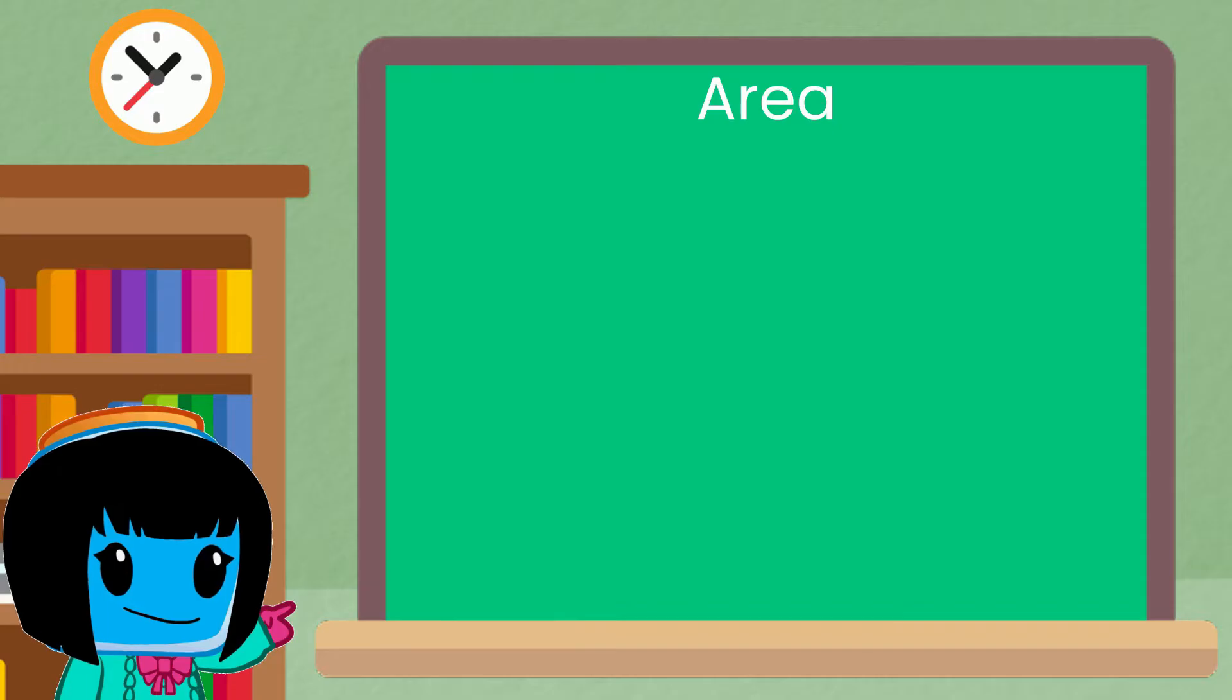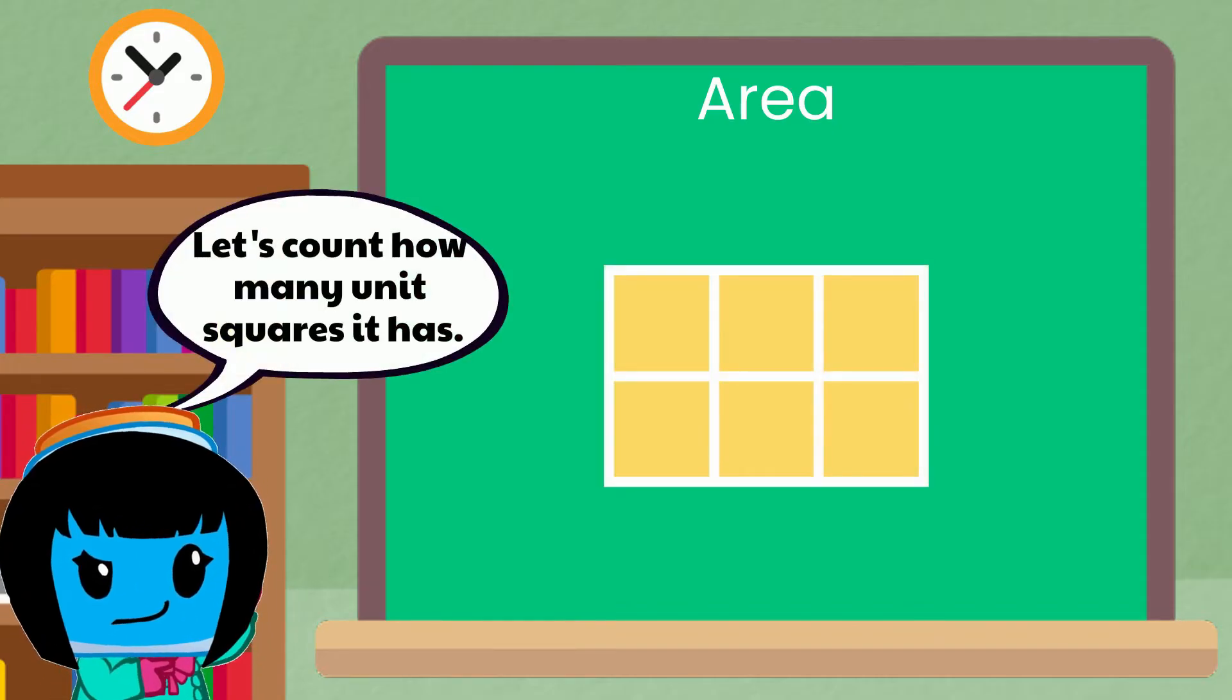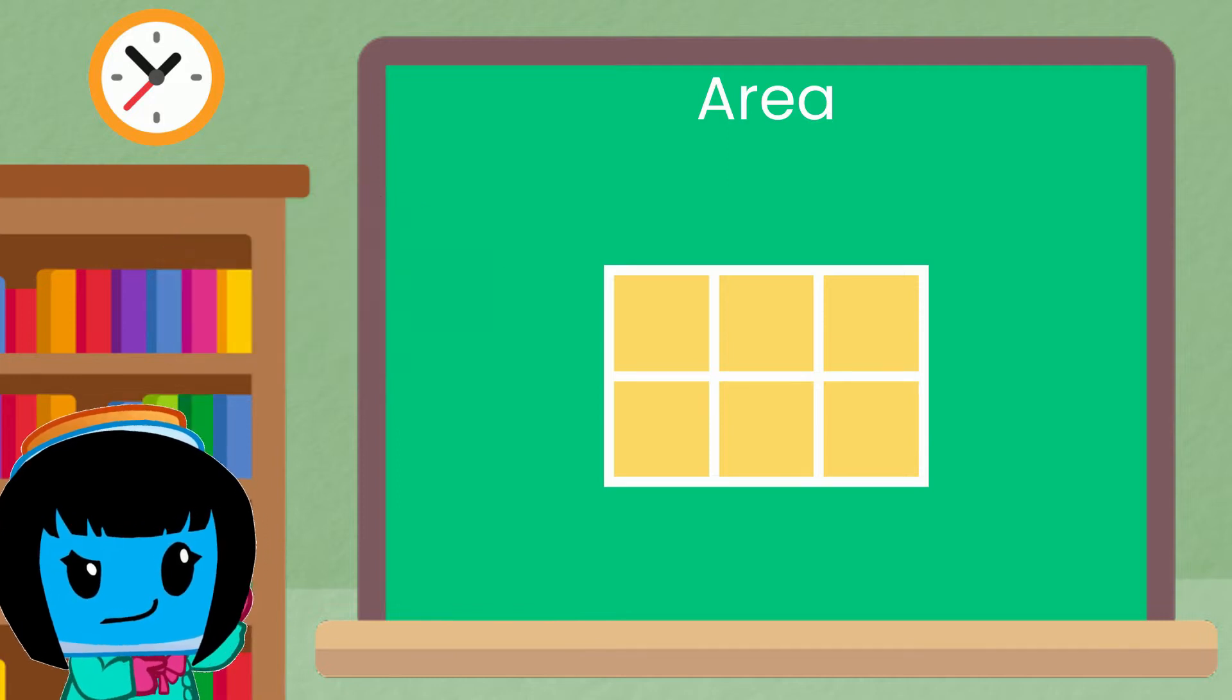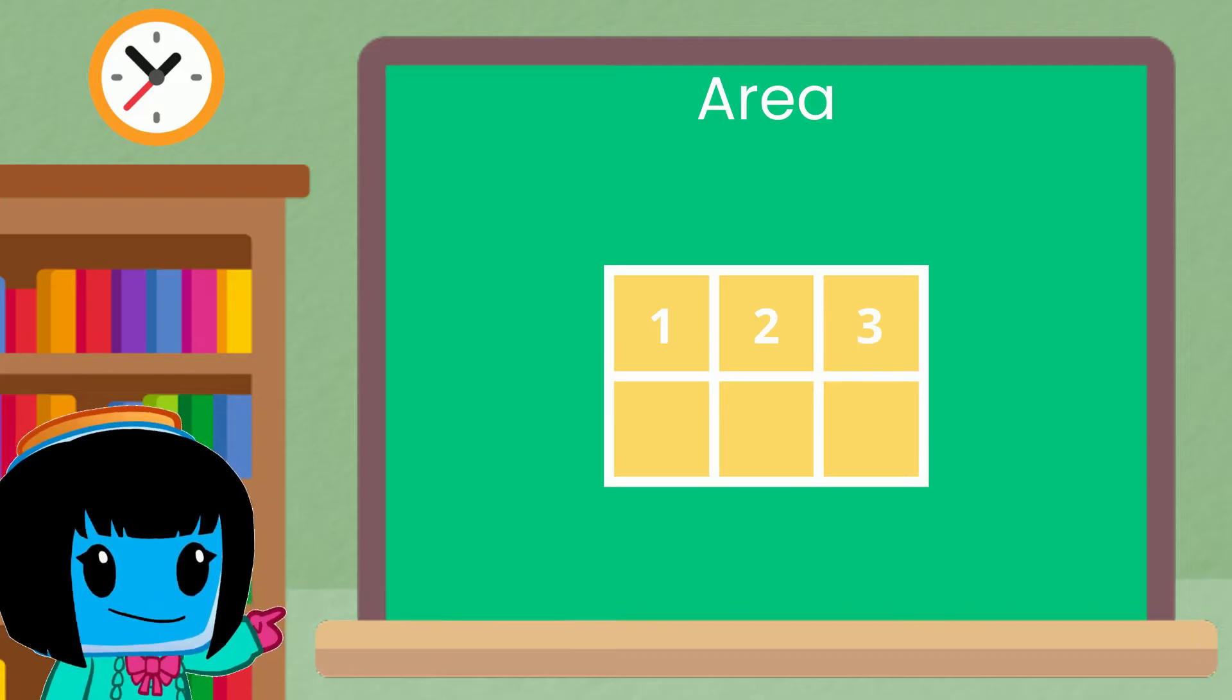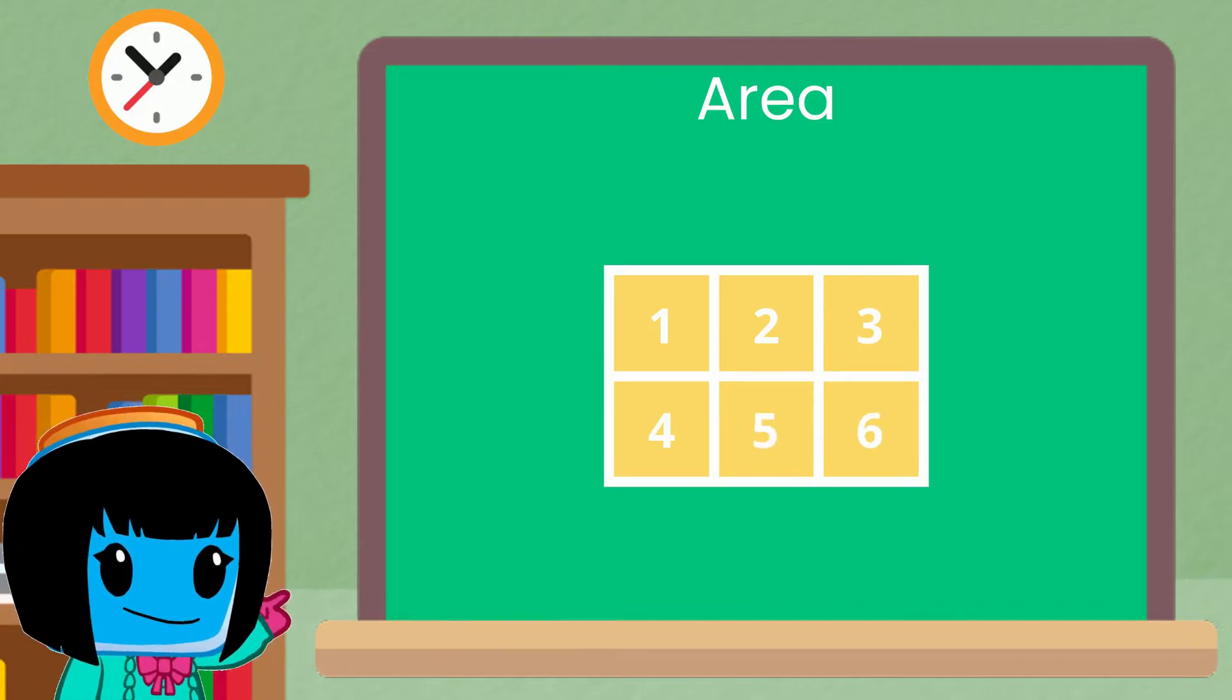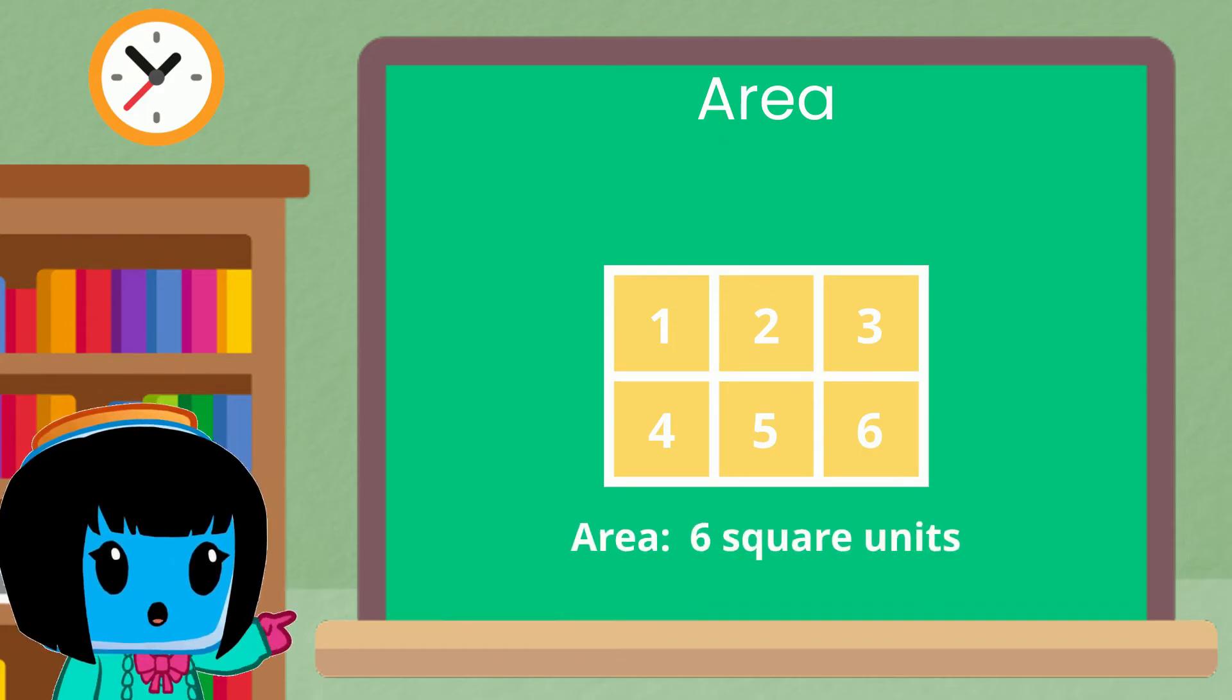For example this rectangle can be drawn with unit squares. Let's count how many unit squares it has. One, two, three, four, five, six unit squares. So its area is six square units.